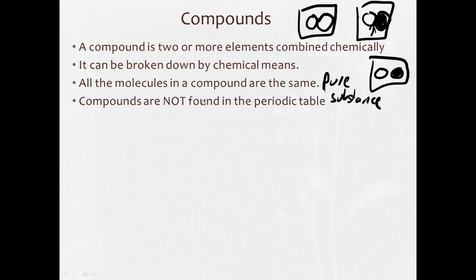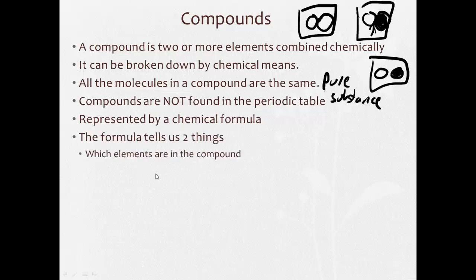Now compounds are not found on the periodic table. Everything on the periodic table was elements. A compound is represented by a chemical formula. Okay, so a chemical formula represents a compound. And the formula tells us two things. It tells us what elements are in the compound, and how many of each are in the compound.